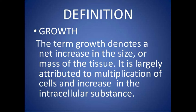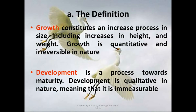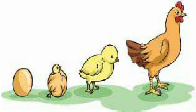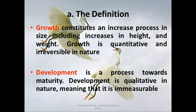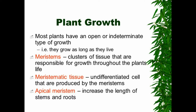As development proceeds, all sorts of changes take place. The most obvious change is growth. The progressive changes which are undergone before an organism acquires its adult form constitute the embryonic development. Growth is the permanent and irreversible increase in size that occurs as an organism matures.